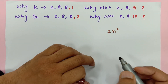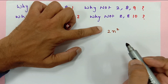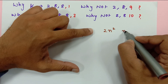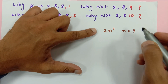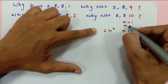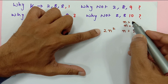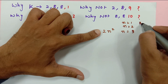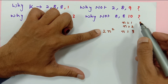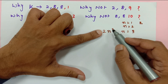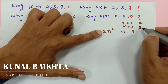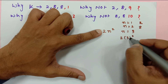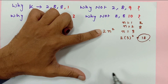The Bohr-Bury rule says that the maximum number of electrons accommodated in a particular orbit is given by 2n². Starting from n=1: 1² × 2 = 2, so the first orbit holds maximum 2 electrons. For n=2: 2² × 2 = 8, so the second orbit holds maximum 8 electrons. For n=3: 3² × 2 = 18.